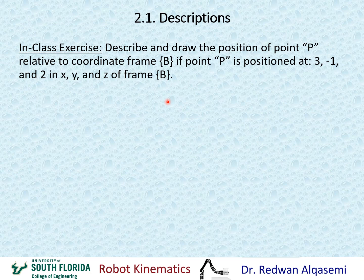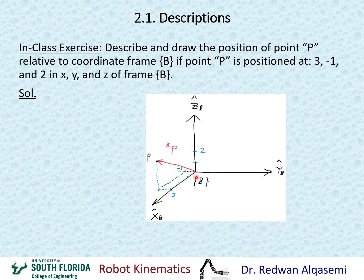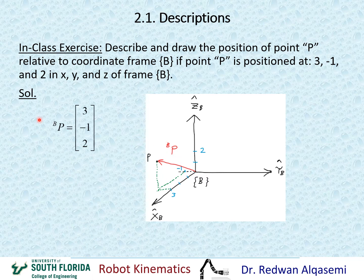Here is the solution. In the drawing, I first go positive three units in X, then negative one unit in Y, then positive two units in Z — that ends up being point P. I drew the vector describing point P relative to frame B, and defined it mathematically: P relative to frame B equals 3, negative 1, and 2 units.